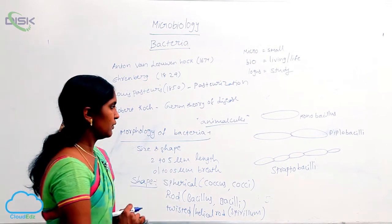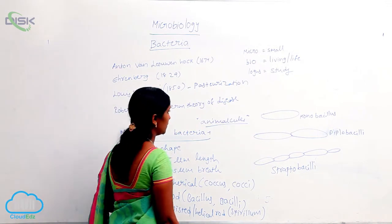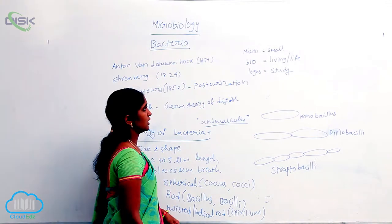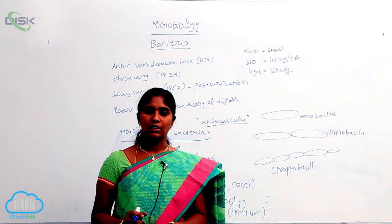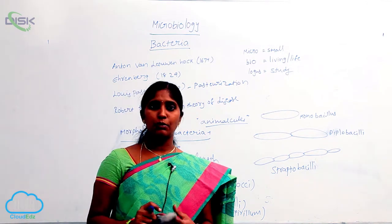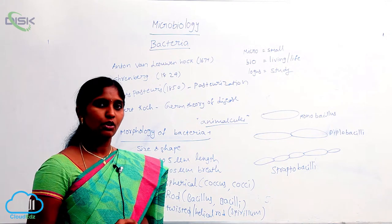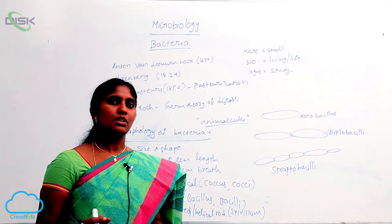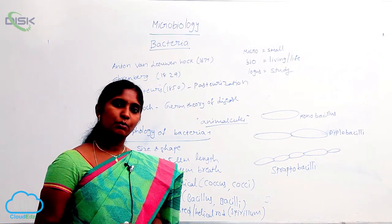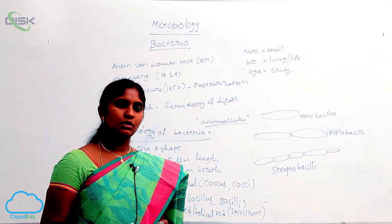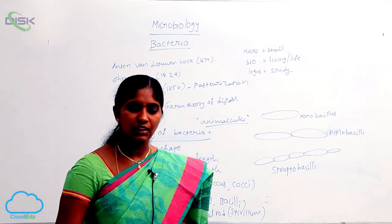Like vibrio — you are seeing here vibrio, that is comma shaped. Comma shaped bacteria: Bdellovibrio bacteriovorus is comma shaped. Next, Coloravibrio, that is also a comma shaped bacteria.